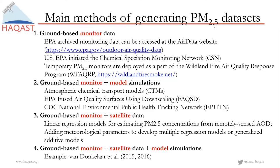Moving on to usage of satellite data: ever since we have had the ability to derive surface PM2.5 from satellite-based data, there have been many studies using different scales and different methods to combine them. A typical method is to use linear regression models that estimate PM2.5 concentrations from remotely sensed aerosol optical depth. One thing to keep in mind is that satellite data cannot directly provide what is on the surface — when satellite data sees aerosol in the air, it is based on column-integrated data. So you know what is in the entire column, but you still have to derive what happens on the surface using physical understanding or other correlations.